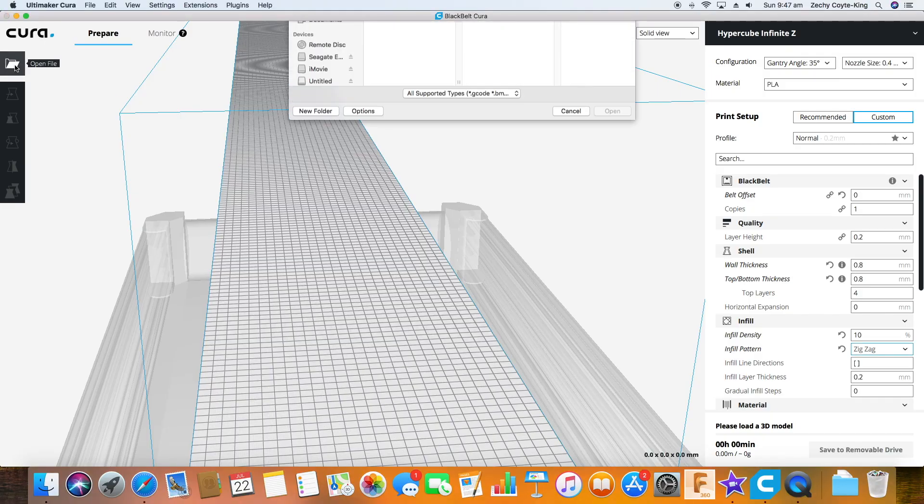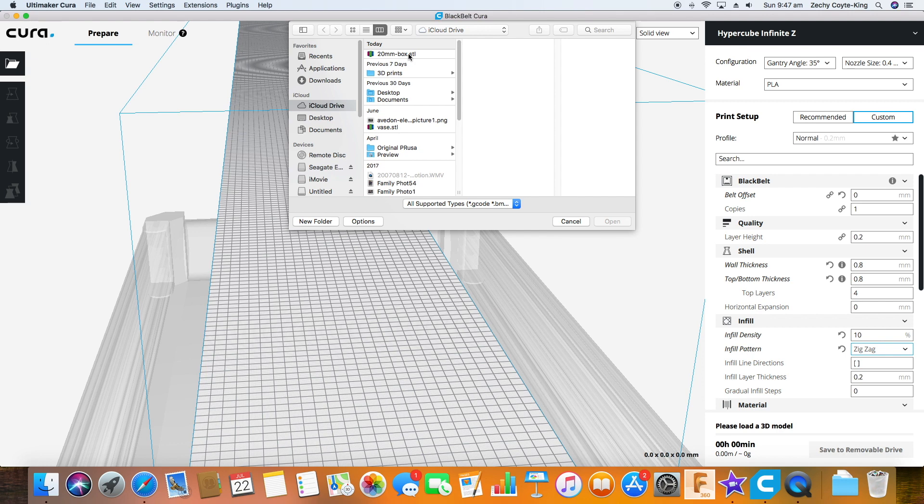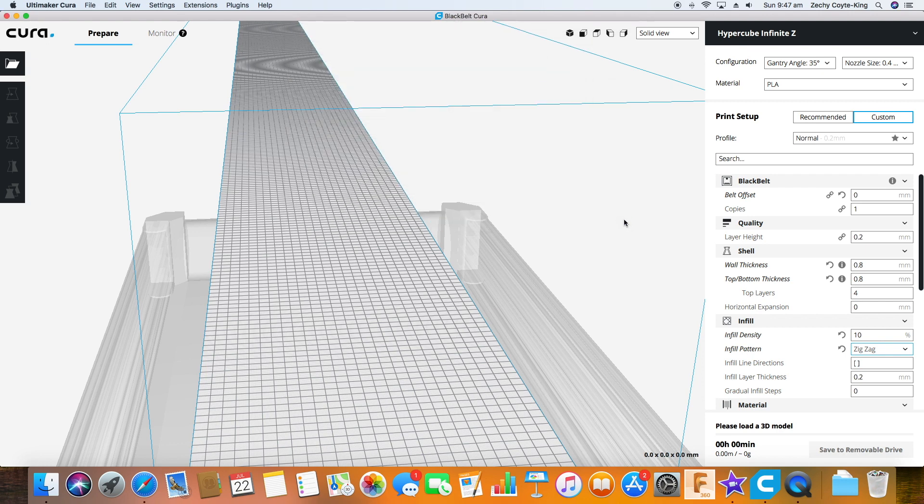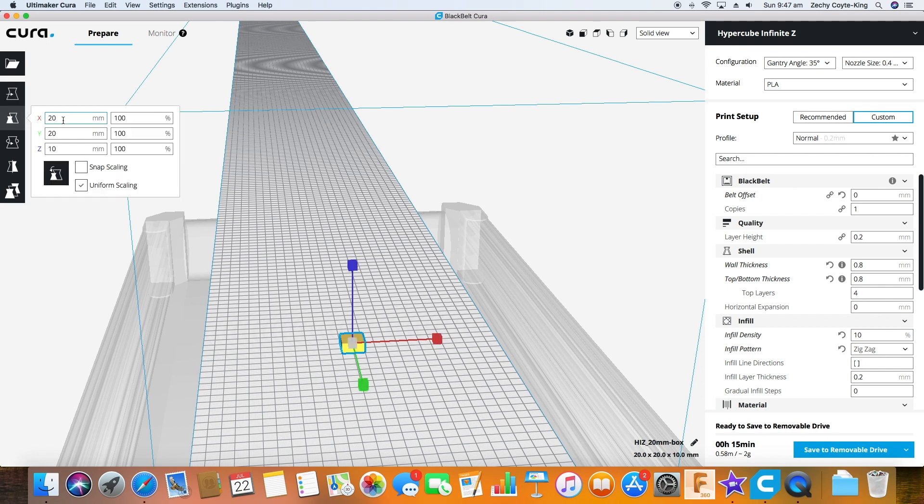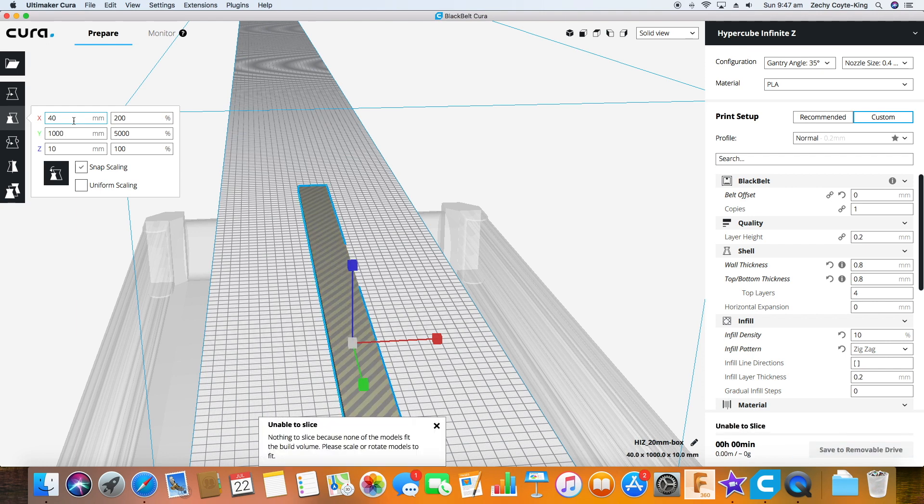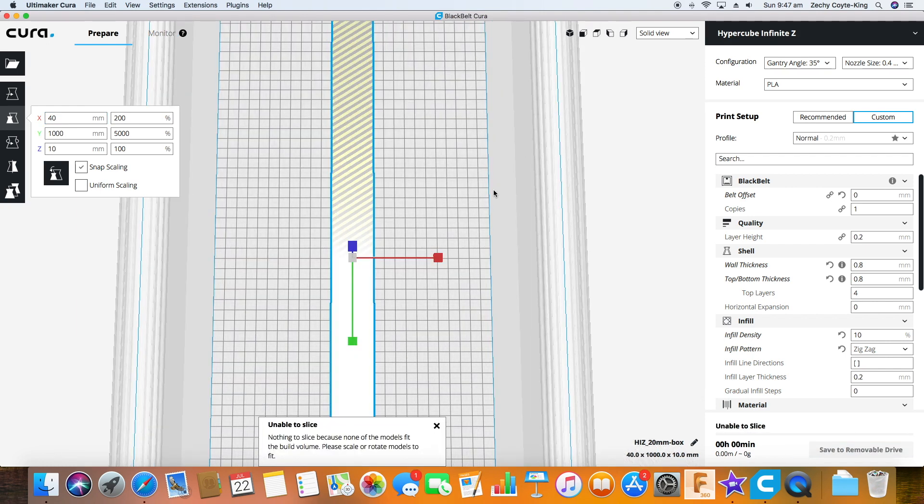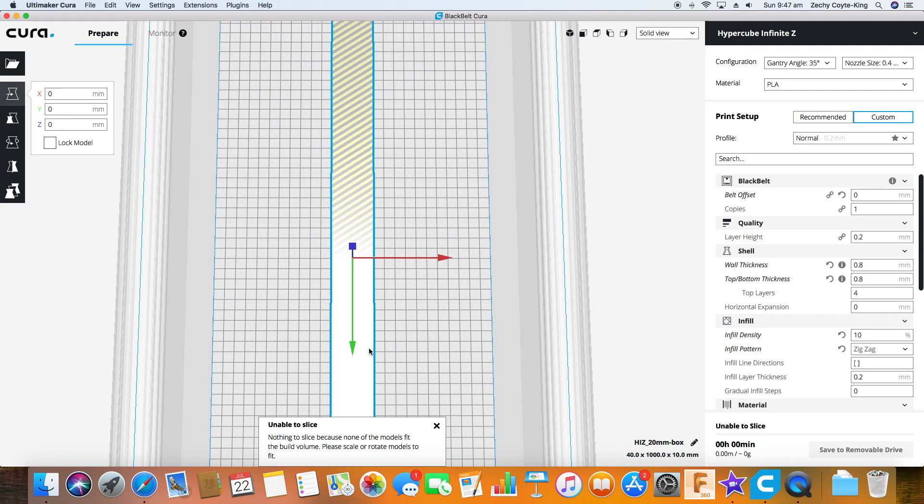To make a test print, I used a 20mm box calibration cube and I scaled it in Black Belt Cura to 40mm wide, 1 meter in the Y axis, and 10mm in the Z axis. I printed at 0.2mm layer heights with 0.8mm wall thickness and 10% infill.